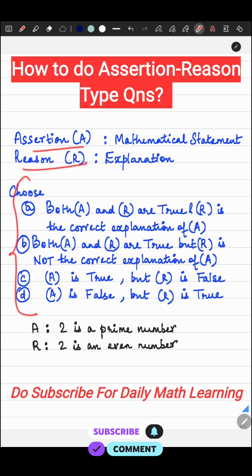The first statement will be a mathematical statement, and the second statement, which is the reason, will be an explanation. It will be some explanation or a mathematical fact.